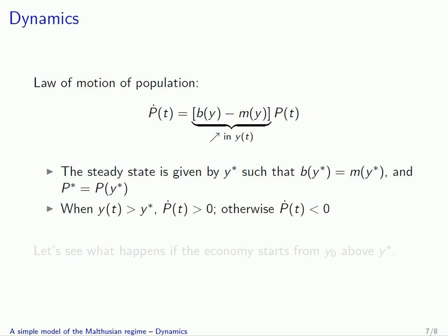We could be in two kinds of situations at any point in time: either y(t) is above y* or y(t) is below y*. If y(t) is above y*, then b(y) is bigger than b(y*) and m(y(t)) is lower than m(y*), so the difference between b(y) and m(y) is positive, such that ṗ(t) is positive — population will grow. Otherwise, if y(t) is lower than y*, then population will decrease and ṗ(t) is below zero.